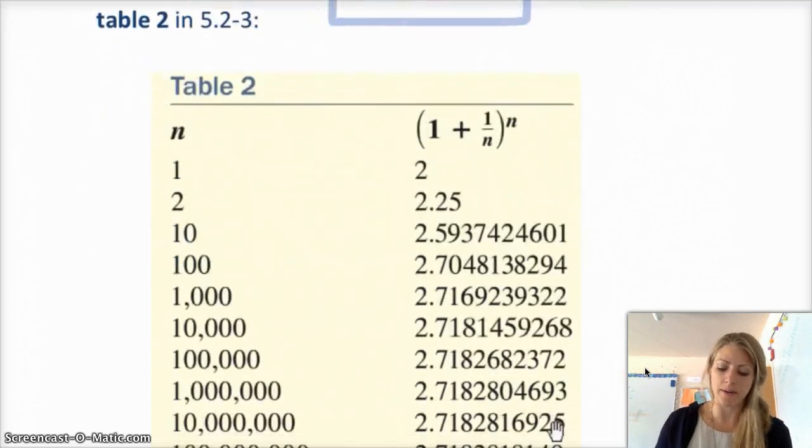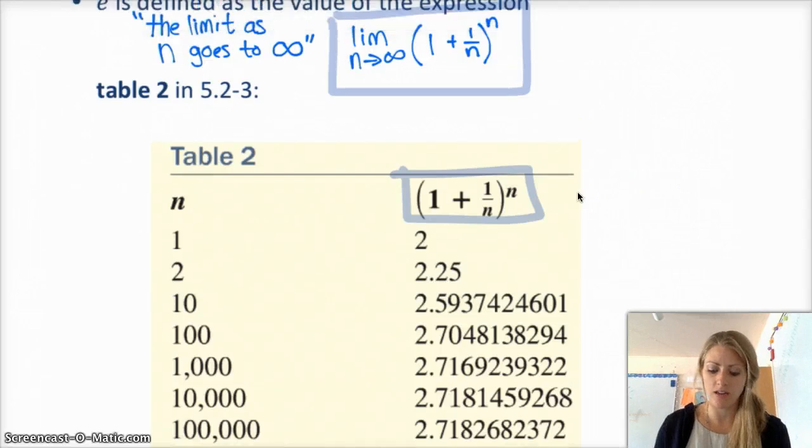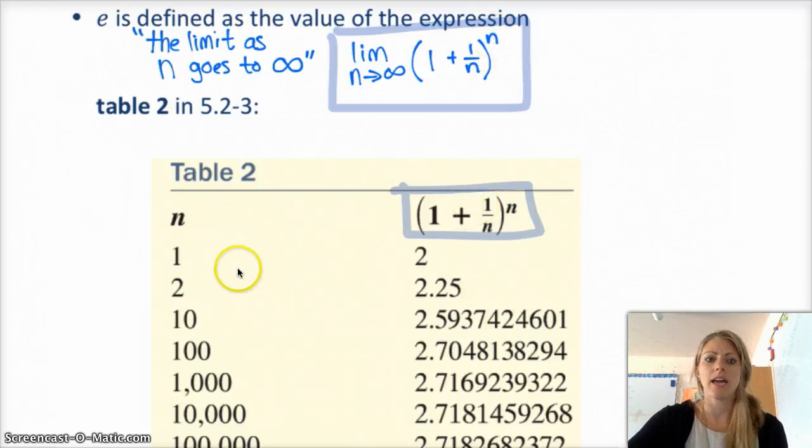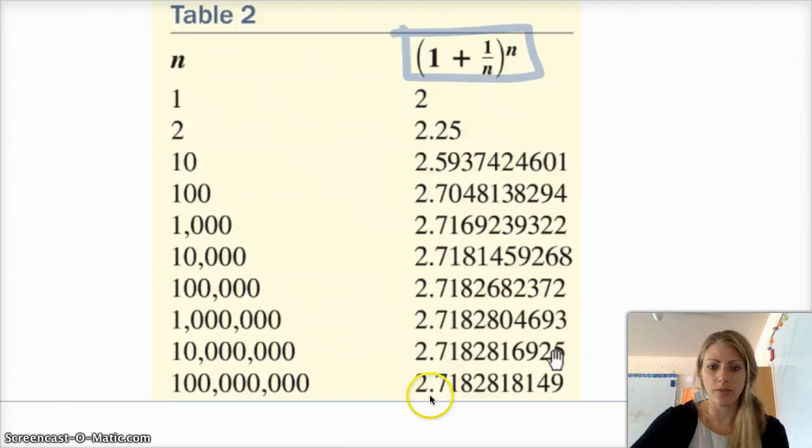So if you take a look at the following table, so what I have here is 1 plus 1 over n to the n, right, which is the expression that we're talking about here, for different values of n. So when I plug in 1 for n, I have 1 plus 1 over 1 raised to the first, so that is 1 plus 1 raised to the first, which is 2. When I plug in n equals 1, I get out 2. When I plug in 2, that's 1 plus 1 half, so 1.5, raised to the 2, and that's 2.25. And so as n gets bigger and bigger and bigger, so when n is 10, it's 2.59, when it's 100, it's 2.7048, and as we get larger and larger values of n, this value, if you were to plug it in into your calculator, gets closer and closer and closer to the true value of e.